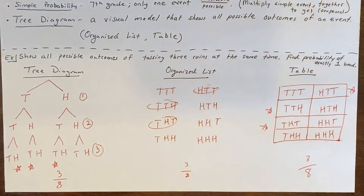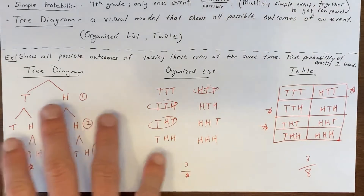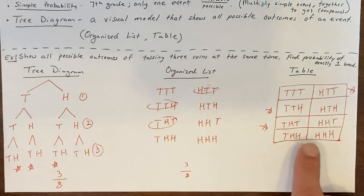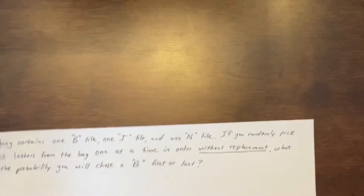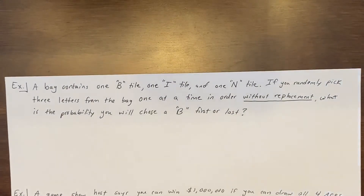So those are our three ways to represent our sample space — the complete set of possible outcomes based on the given information. The three models are: tree diagram, organized list, and table. Now we're going to look at some examples.